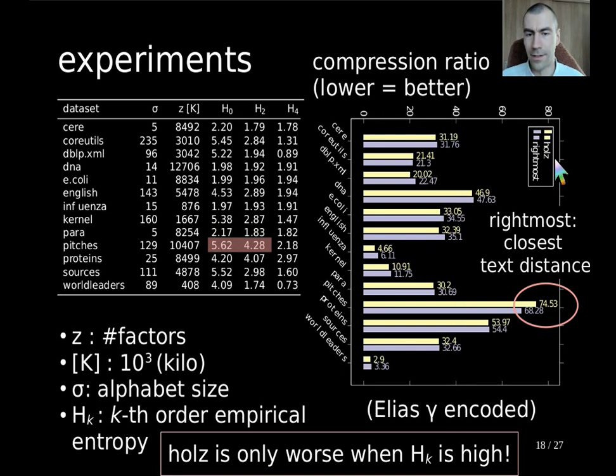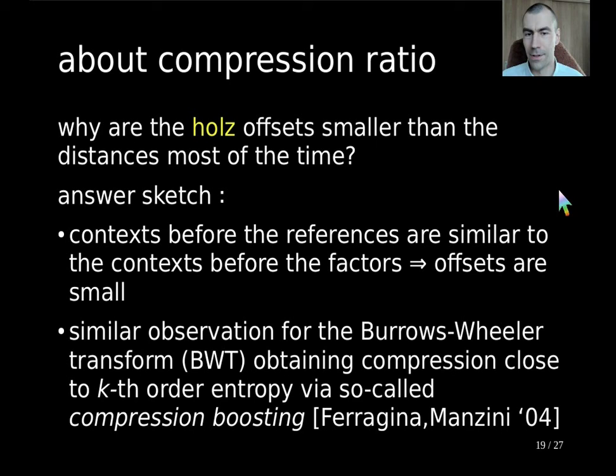To understand that, please read either the paper or I just give here a small sketch, meaning that the idea is that the context before the references are similar to the context before the factors in low-order entropy texts, and therefore the offsets are small. It's kind of a similar observation for the Burrows-Wheeler transform, or shortly BWT, which obtains the compression close to the kth order entropy by so-called compression boosting.